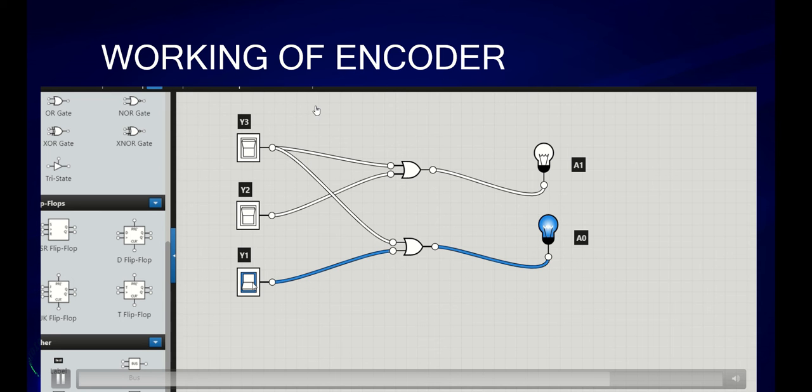When these 3 are 0, the output will be 0. When y1 is 1, a0 will be 1. When y2 is 1, a1 will be 1. When y3 is 1, a1 and a0 both will be 1. This is the working of encoder.